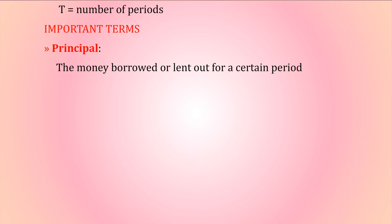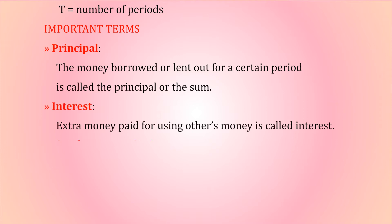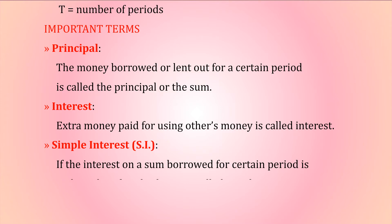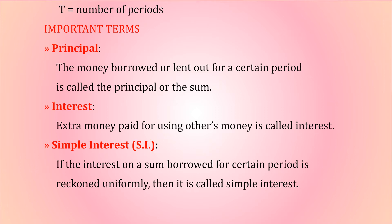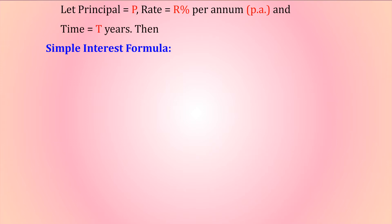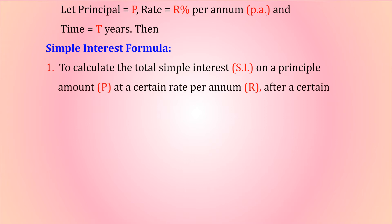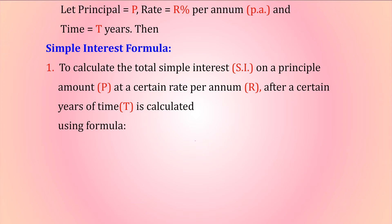Important terms — Principal: the money borrowed or lent out for a certain period is called the principal or the sum. Interest: extra money paid for using others' money is called interest. Simple interest (S.I.): if the interest on a sum borrowed for a certain period is reckoned uniformly, it is called simple interest. Let principal be P, rate R percentage per annum (p.a.), and time T years.